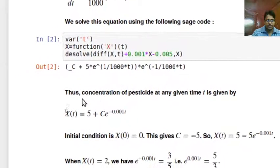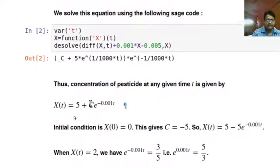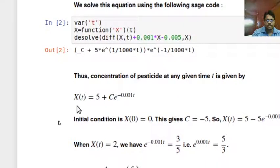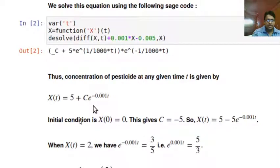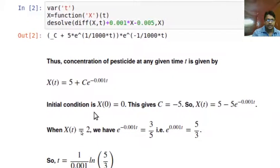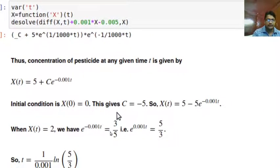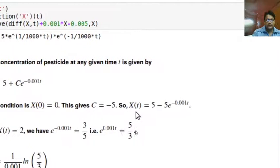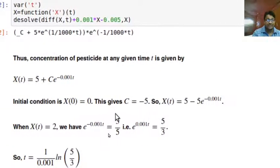If we just simplify it, we can write it this way. Concentration of pesticide at any given time t is given by X(t) equal to 5 plus C times e to the power minus 0.001*t. Initial condition is X(0) equal to 0, this gives C equal to minus 5 if we just put it in this equation. So X(t) will be 5 minus 5*e to the power minus 0.001*t.